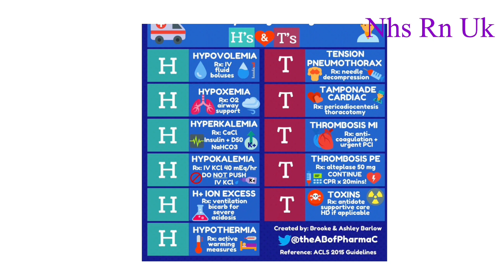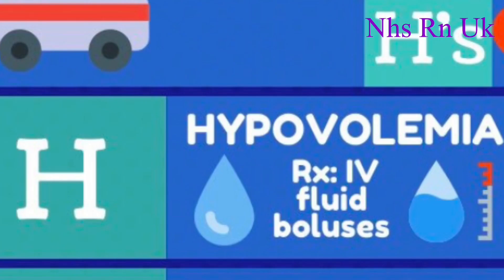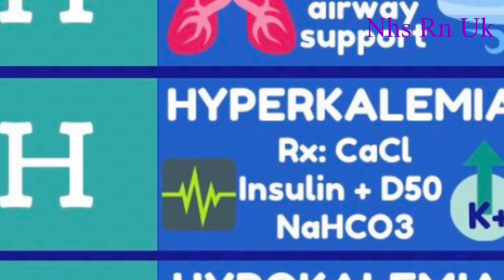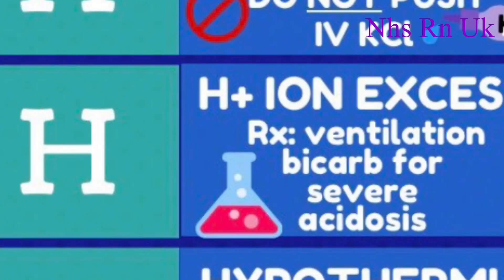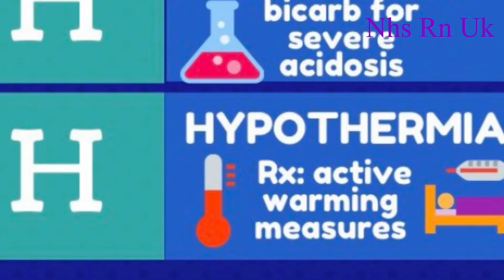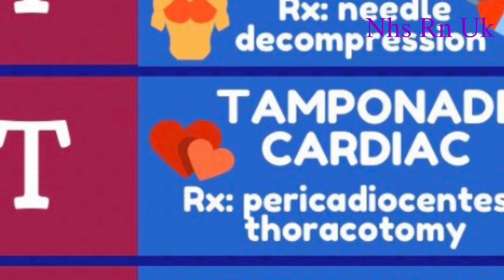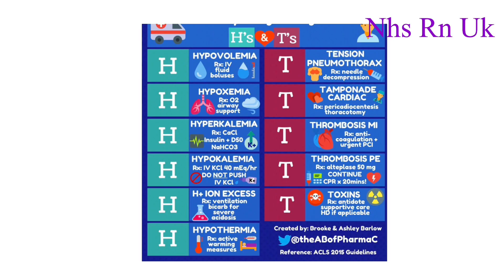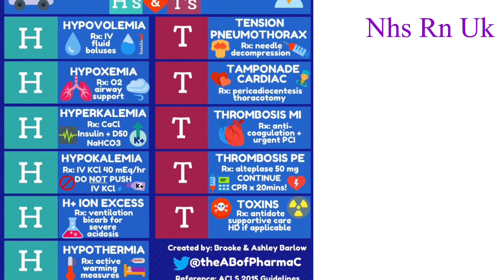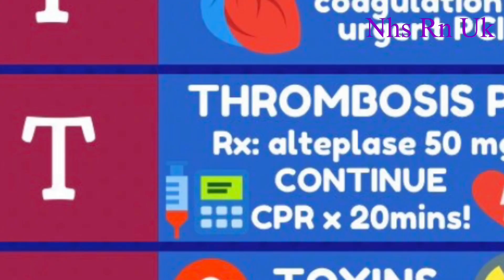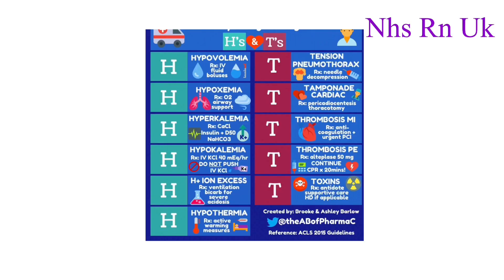Now let's look at the reversible causes of cardiac arrest — the 5 H's and 5 T's. The 5 H's are: hypovolaemia, hypoxia, hypokalaemia/hyperkalaemia, hydrogen ion excess (acidosis), and hypothermia. The 5 T's are: tension pneumothorax, cardiac tamponade, thrombosis due to MI, thrombosis due to pulmonary embolism, and toxins.